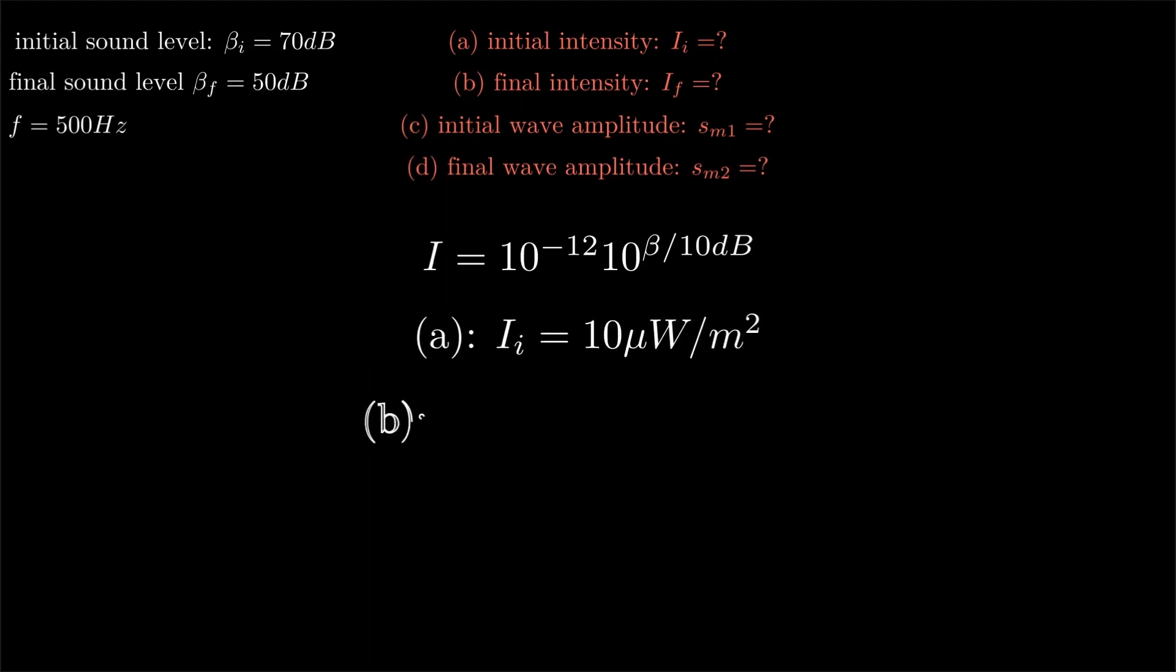Similarly for part (b), the final sound level is 50 decibels. We write it here, decibel units cancel out, 50 divided by 10 equals 5. Since powers are the same, this becomes minus 12 plus 5 equals minus 7. We can convert this to 0.1 micro watts per meter squared. These are our answers for parts a and b.